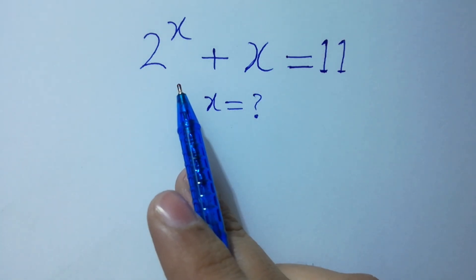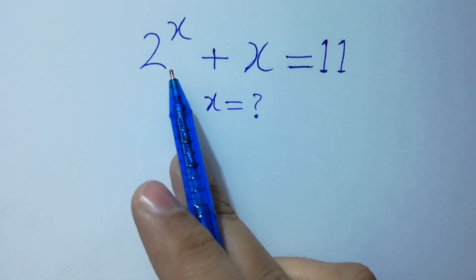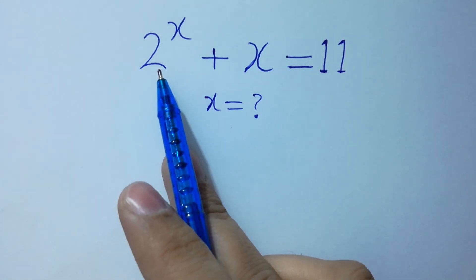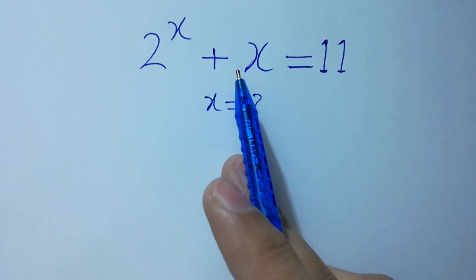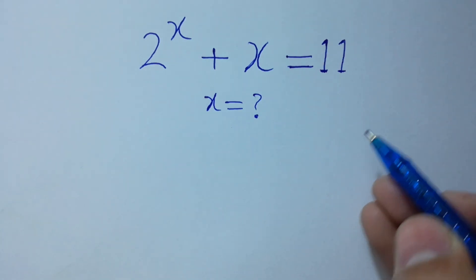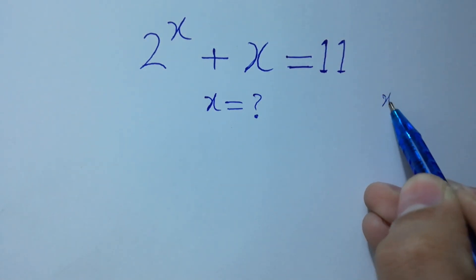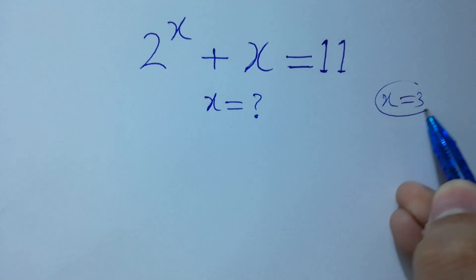But if I put x equal to 3: 2 cubed = 8, 8 plus 3 = 11. So we conclude that x equal to 3 is our final answer.